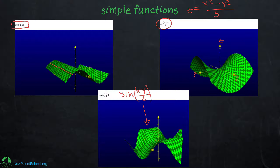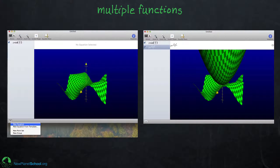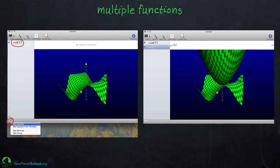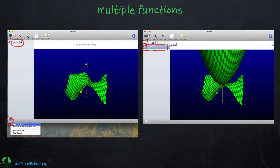Just like in 2D, typing in different functions and getting a graph right away is very easy. You can also do multiple functions: I've taken the sine(xy/2) function, clicked the plus sign to add a new equation, and added a 3D parabola. Just as in 2D, you can check or uncheck the boxes to plot one or both functions.